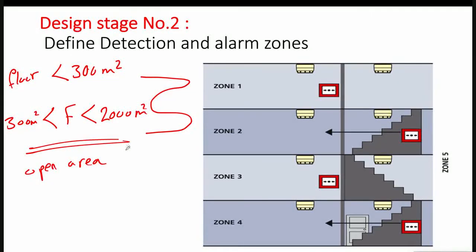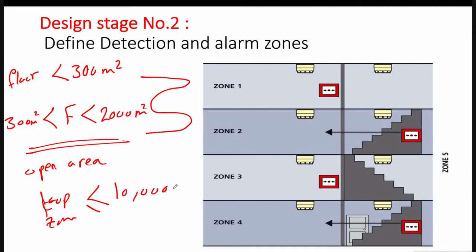For open areas which have no ceiling, like an open garage, one loop or zone can cover up to 10,000 square meters. So it is recommended to assign a complete zone for each floor.